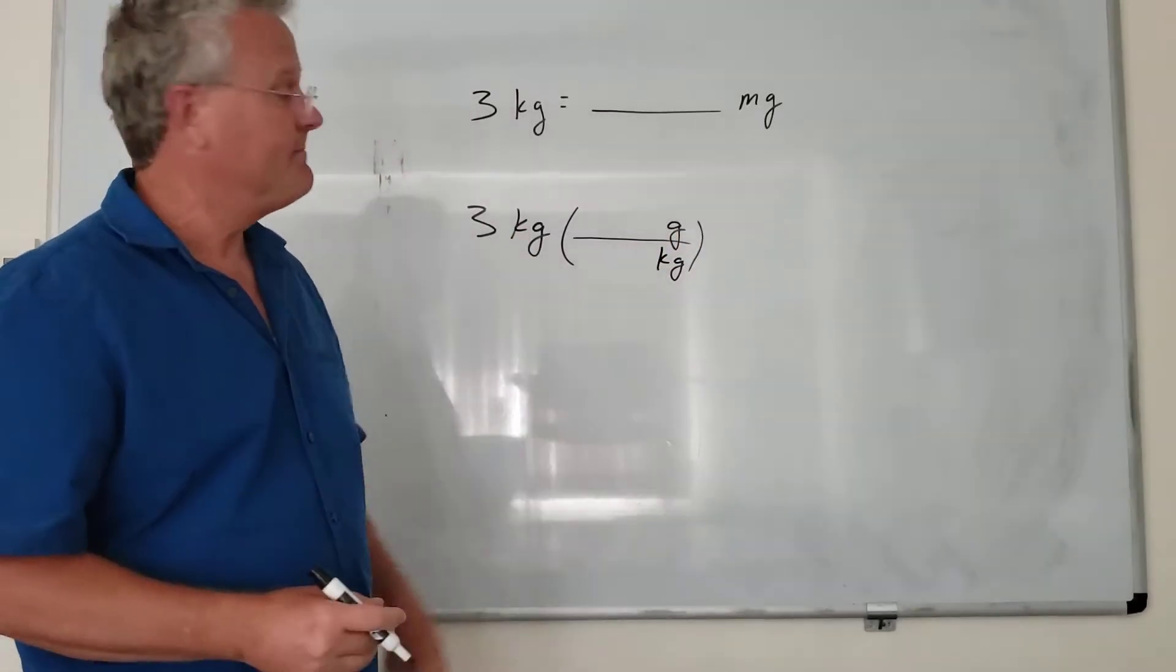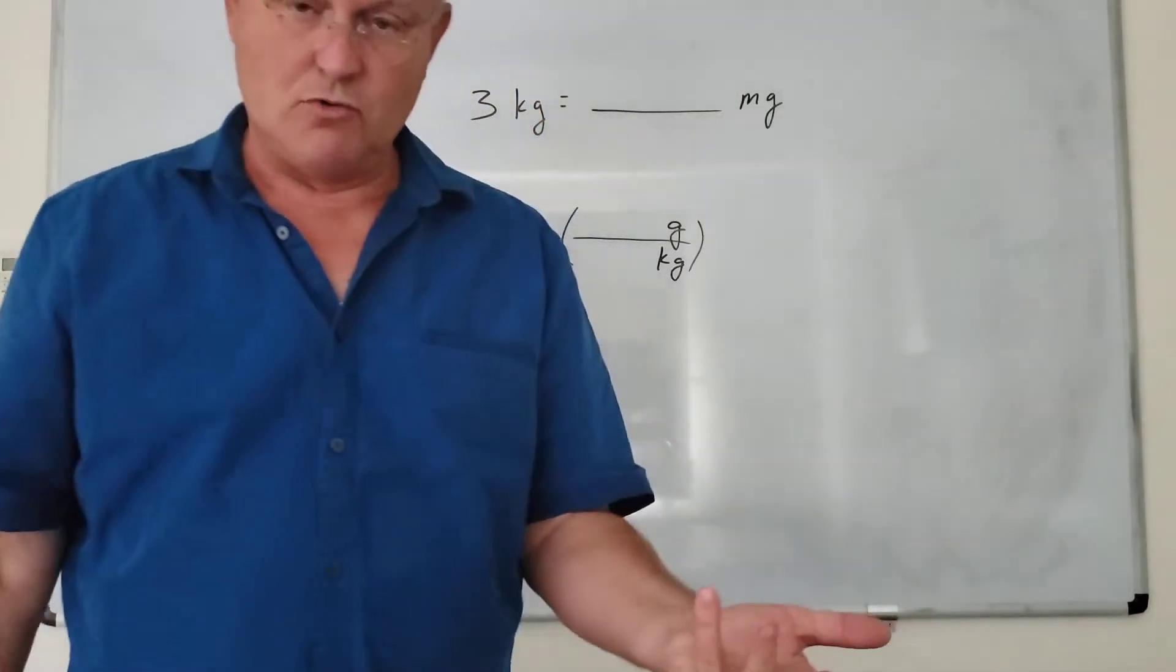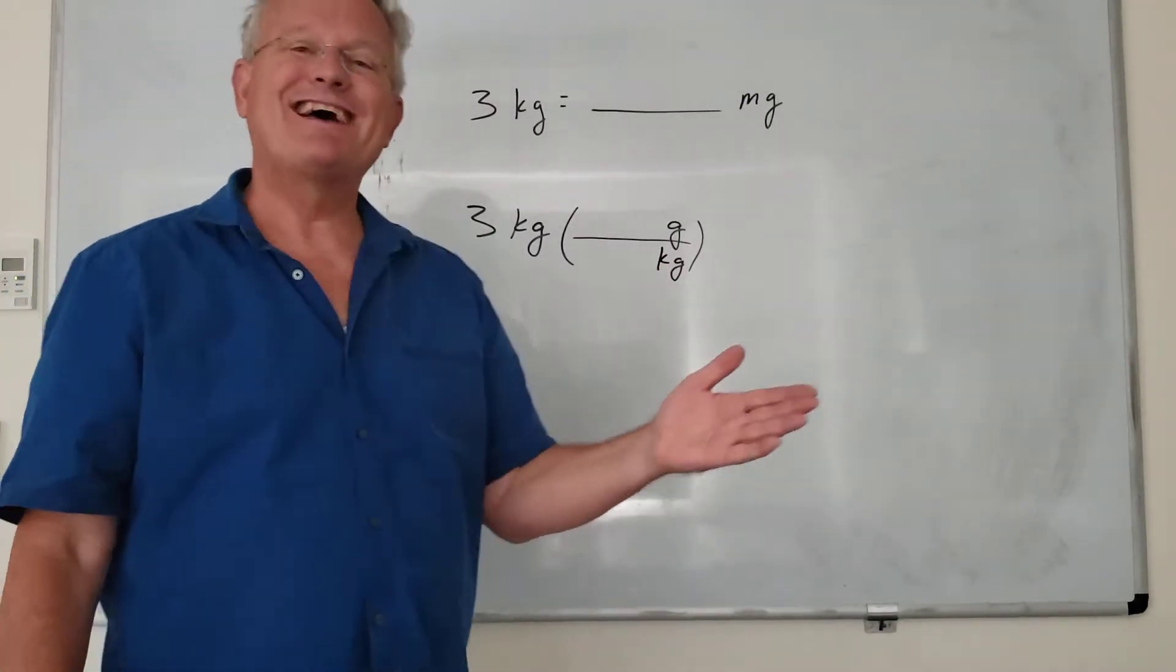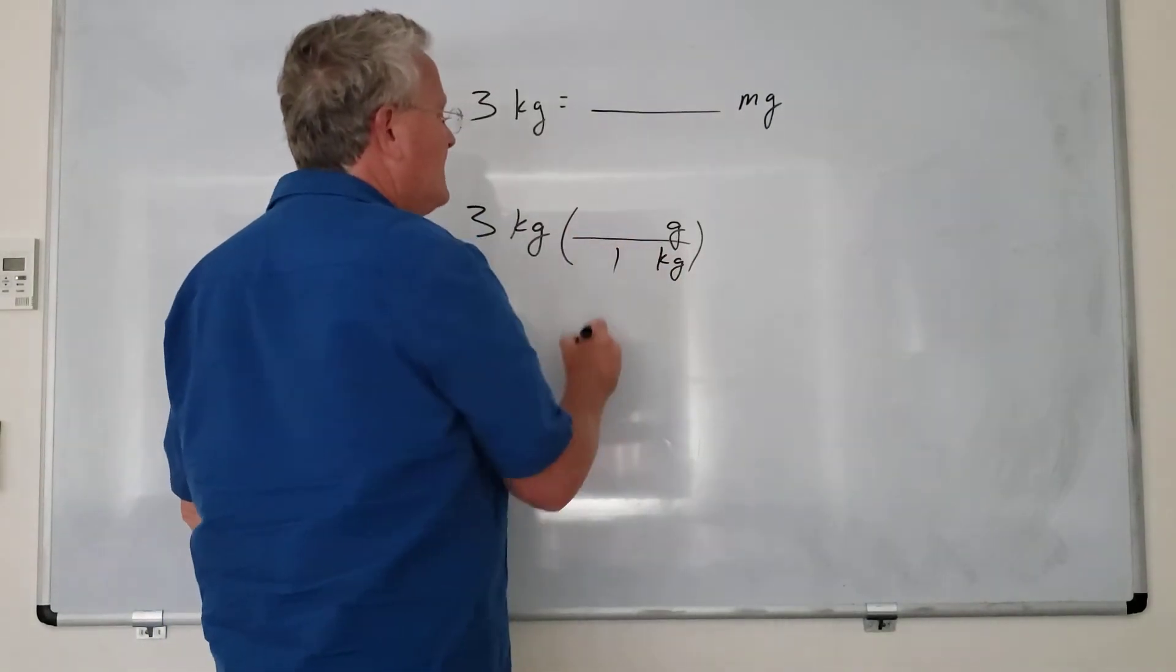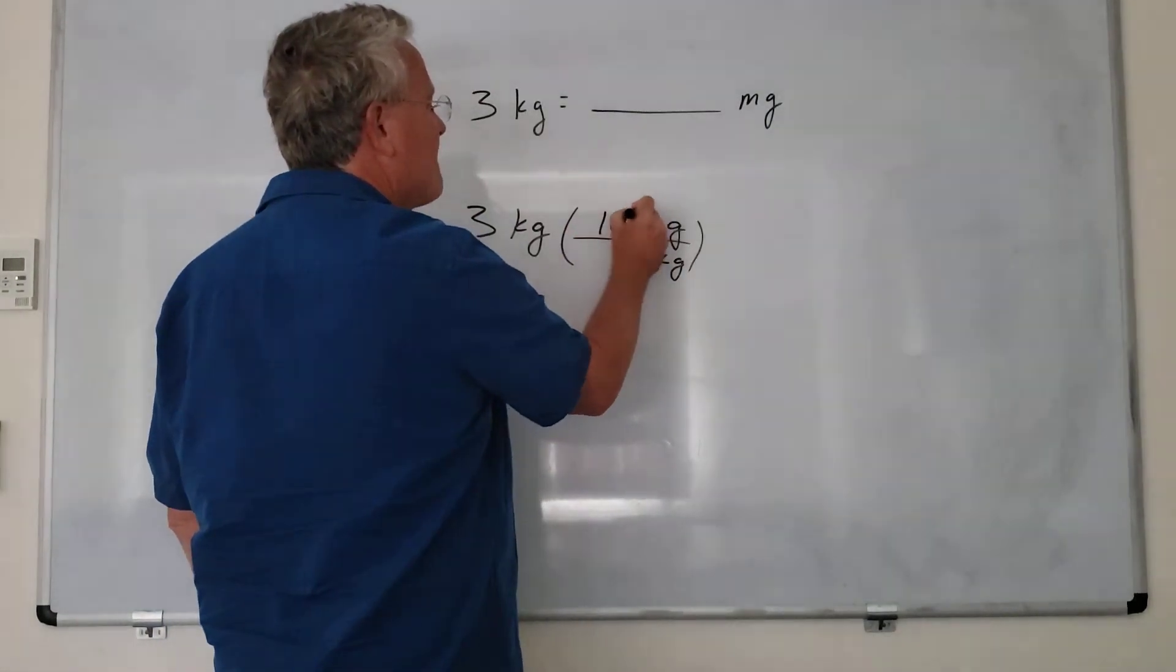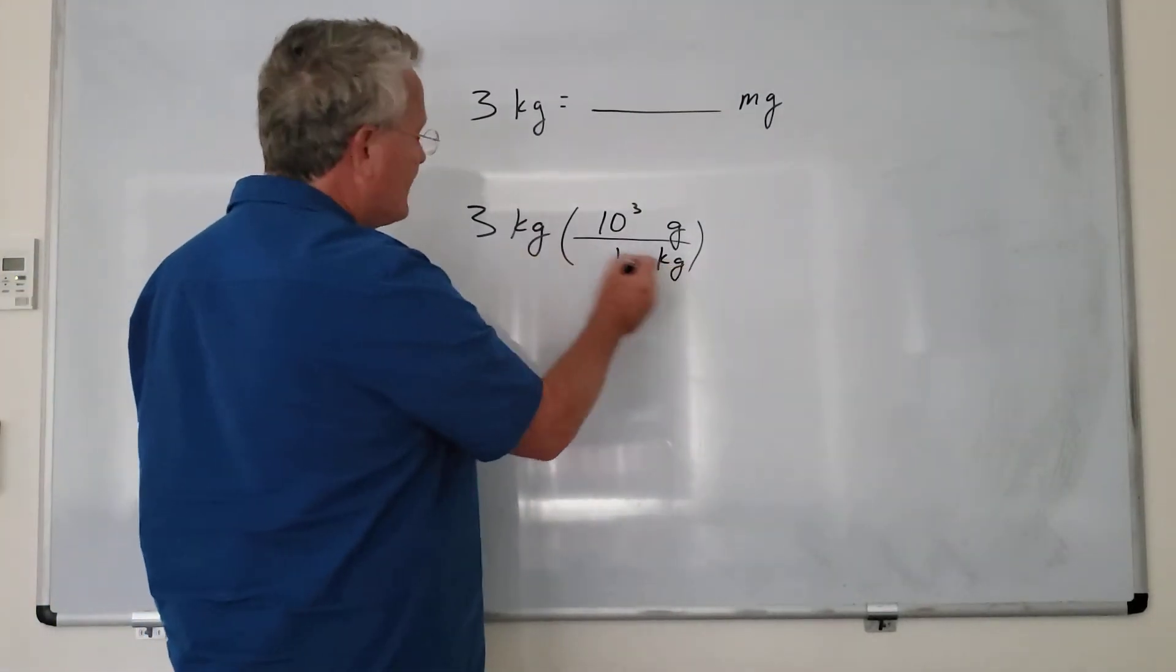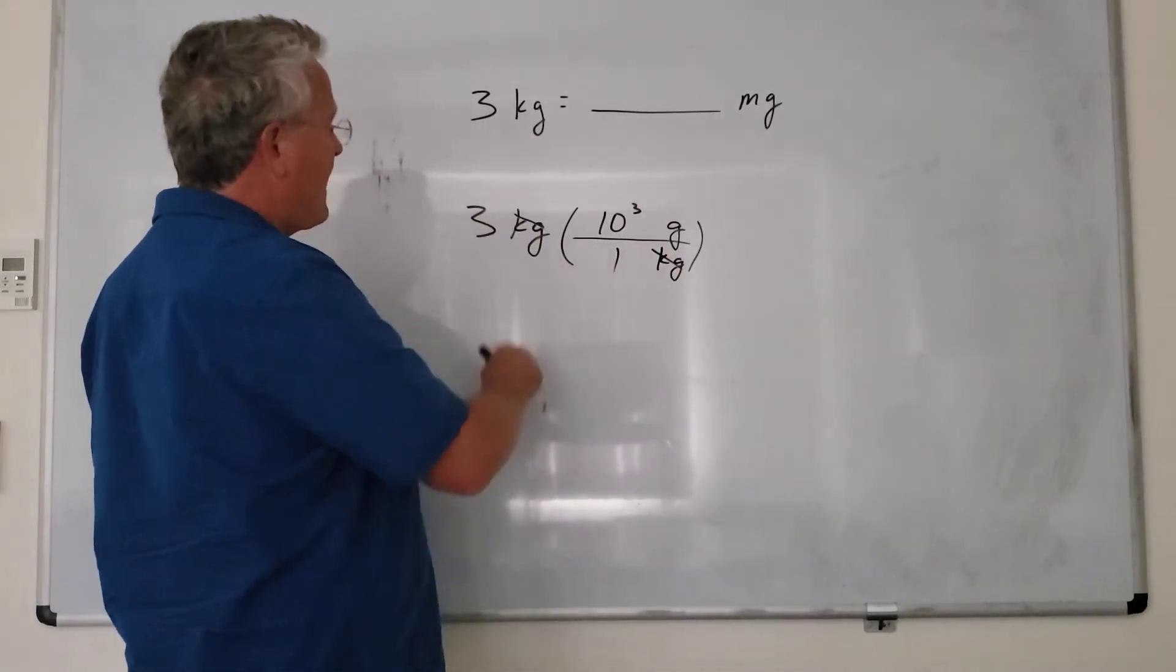Now we look at the table that was given in homework 10, and we can see when we look at kilograms that's 10 to the 3 grams. So in one kilogram there are 1000 or 10 to the 3 grams. Now, these kilograms cancel, so now we're left with grams.